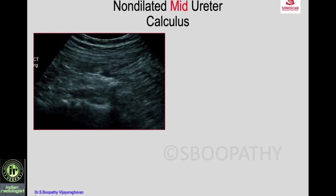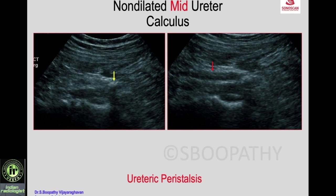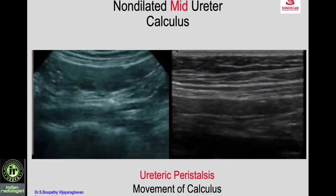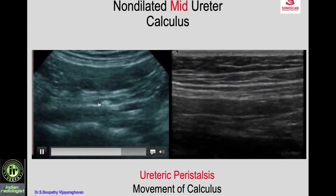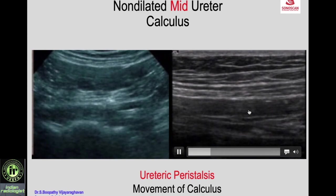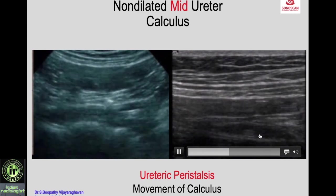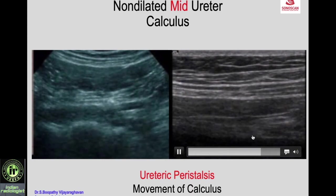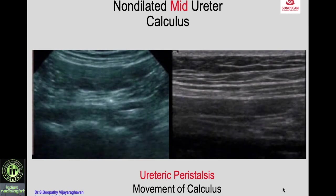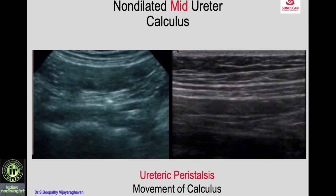Here you see a calculus in the region of the ureter but cannot confirm it is in the ureter. You wait for some time and see ureteric peristalsis — with the peristalsis you nicely see the calculus is within the ureter. Wait for ureteric peristalsis, shown on real time, and confirm with it that the calculus is within the ureter. With high frequency you see the calculus and with ureteric peristalsis the ureter distends around the calculus and the calculus also moves, confirming it is a ureteric calculus.